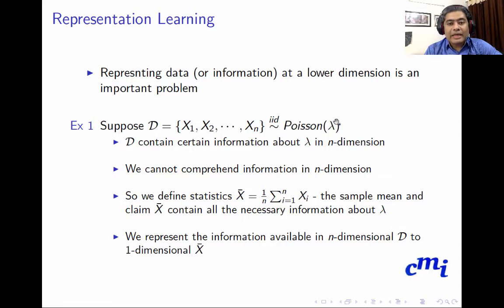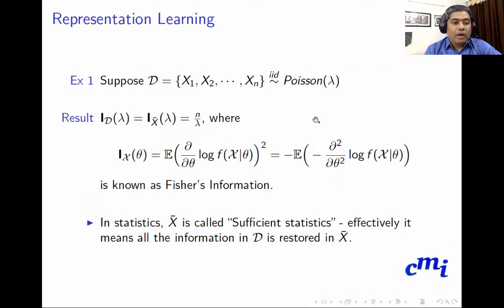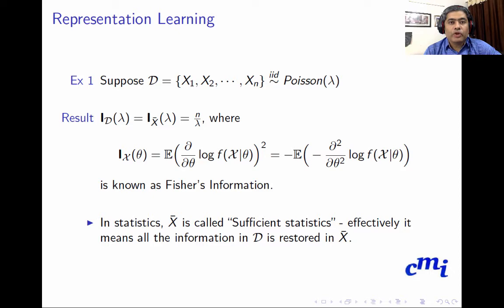One value of x-bar gives us an idea about the possible value of lambda. There is a result that tells us the Fisher information available in dataset D and the Fisher information in the sample mean are exactly the same — that is n/lambda. This can be shown using standard textbooks on statistical inference such as those by Casella-Berger or C.R. Rao. Fisher information is defined as I = E[(d/dθ) log f(x;θ)]².